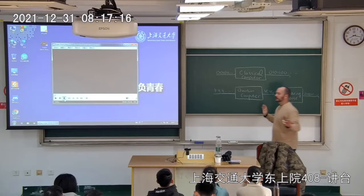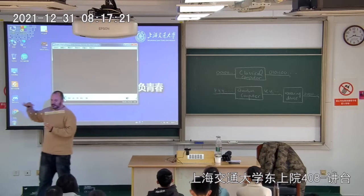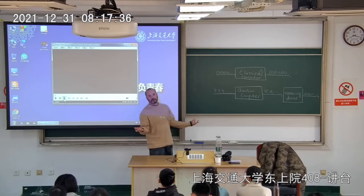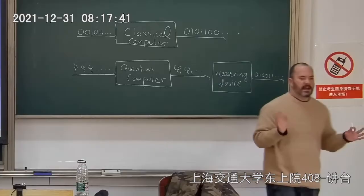A measuring device is what forces the electron. The electron waves throughout all possibilities — we cannot experience this. When we put the electron through the measuring device, we say 'Electron, what are you? You have to be something now.' And the electron says 'I'm zero,' or the next time 'I'm one.' But prior to measurement, it doesn't have any well-defined notion of being zero or one.